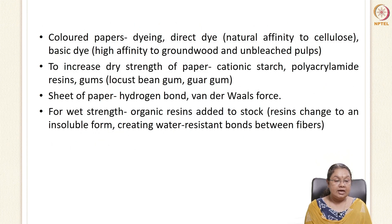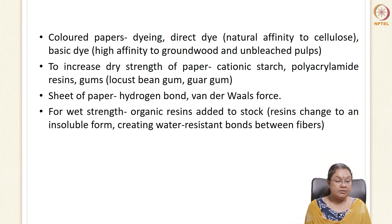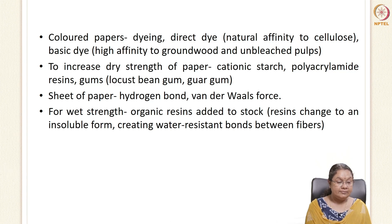Colored papers are dyed using direct dyeing or basic dyeing, exploiting the natural affinity of dyes to cellulose. In basic dyeing, groundwood pulps or unbleached pulps are typically used. To increase dry strength, cationic starch, polyacrylamide resins, or gums like locust bean gum and guar gum can be added. To increase wet strength, organic resins are added that change the paper to an insoluble form, creating resistance between fibers. Papers are generally held together by hydrogen bonds and van der Waals forces.